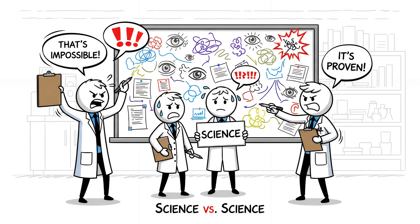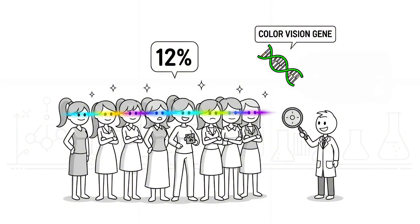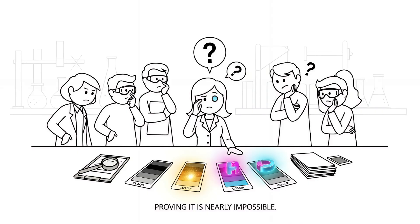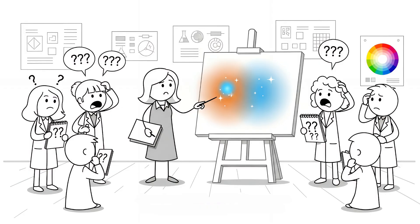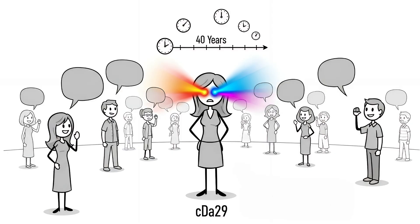Now here's where science starts fighting itself. Some researchers refuse to believe it's real. The genetic mutation shows up in 12% of women. Yes, only women, thanks to X chromosomes. But proving someone actually perceives these colors is nearly impossible. How do you describe a color that no human language has a word for? In 2010, a British woman identified as CDA29 passed every test. She could distinguish between shades that looked identical to everyone else in the lab.